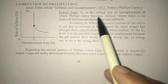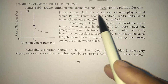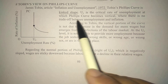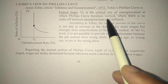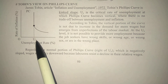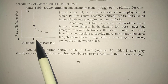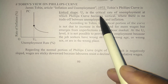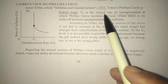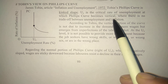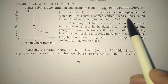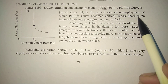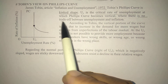Uc is the critical rate of unemployment — at which the Phillips curve becomes vertical. Tobin named this the critical rate of unemployment, where there is no trade-off between unemployment and inflation.